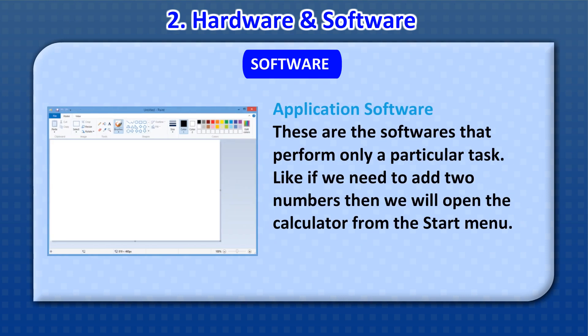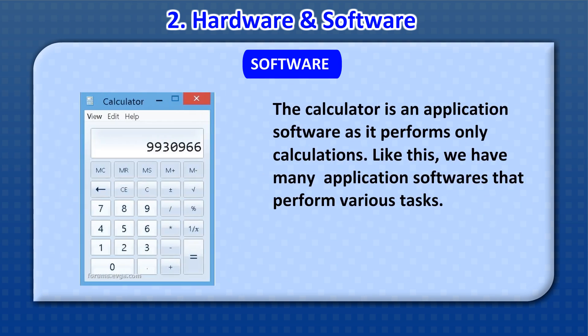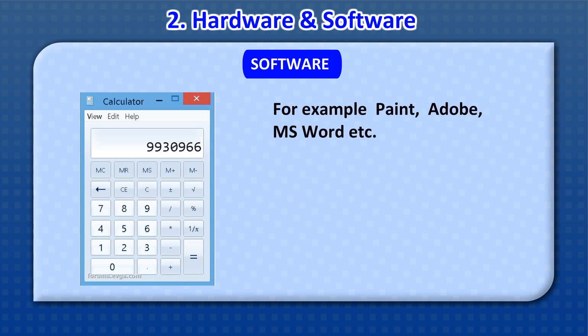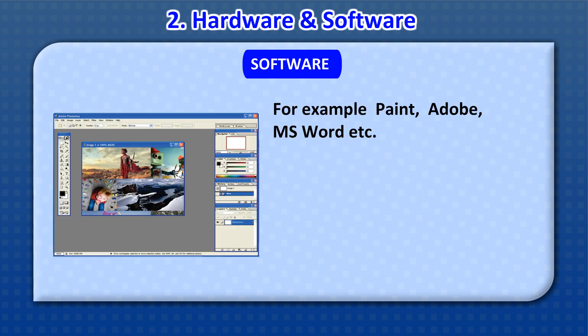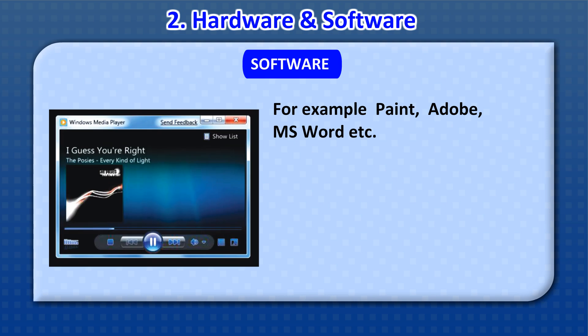Application software refers to softwares that perform only a particular task. For example, if we need to add two numbers, we will open the calculator from the start menu. The calculator is an application software as it performs only calculations. We have many application softwares that perform various tasks, for example, Paint, Adobe, MS Word, etc.